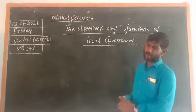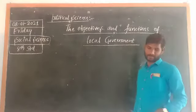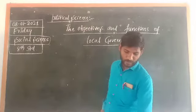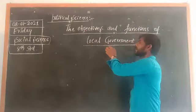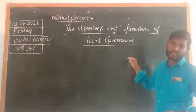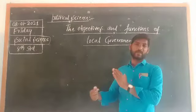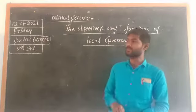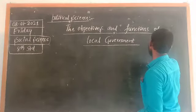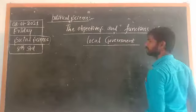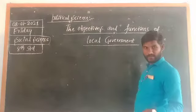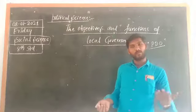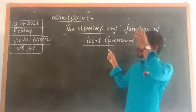Here, what are the main objectives of this local government? The very first one: to involve the local people in solving the problems of their own locality. This local government is very helpful for the involvement of local people. The government head officer is the PDO — Panchayati Raj Development Officer. He is appointed by the government through the KED exam. That's why he is involved with the local people and solves the problems of the locality. That is the main intention of this local government.